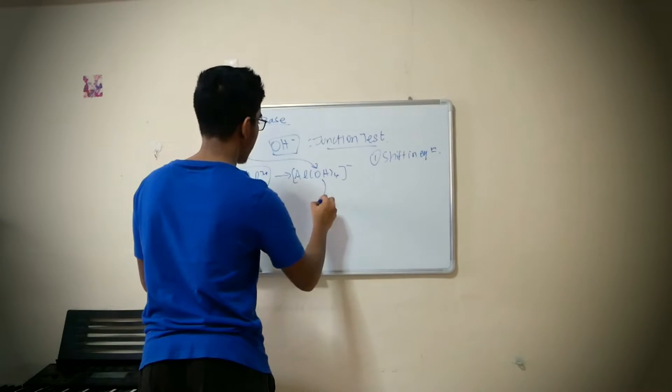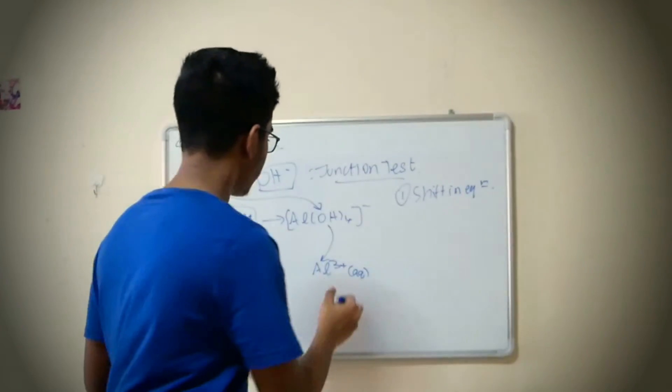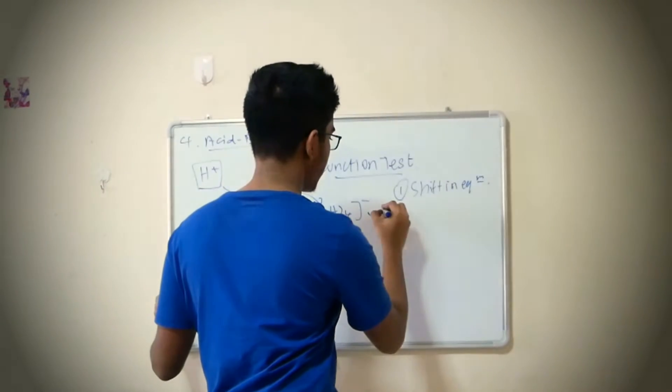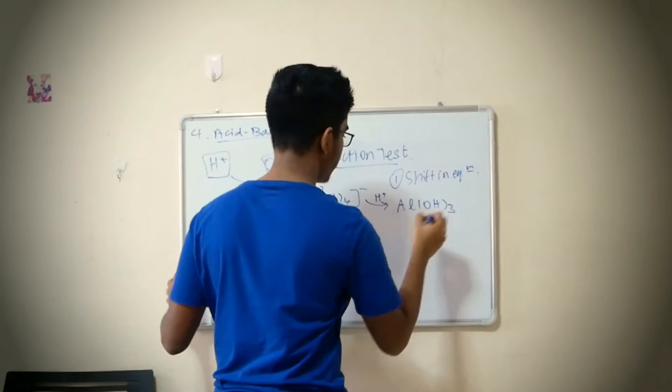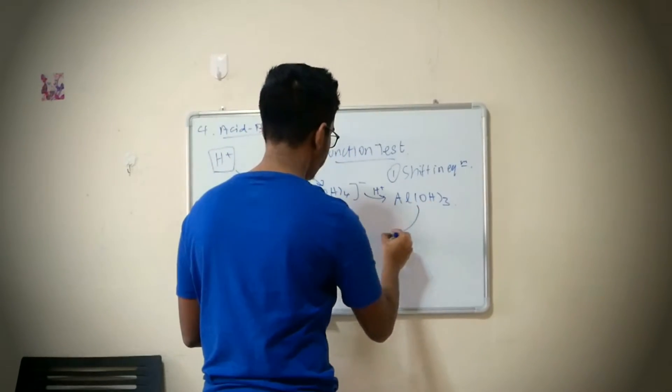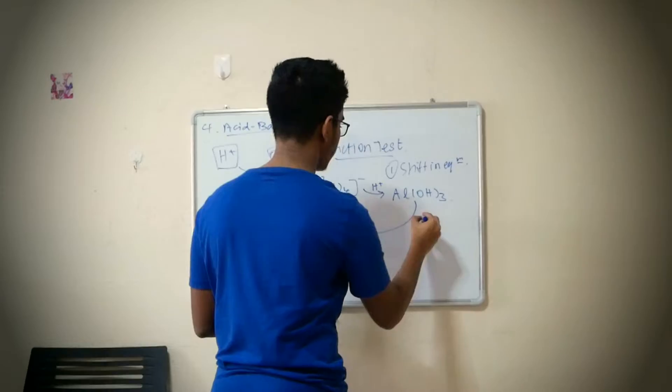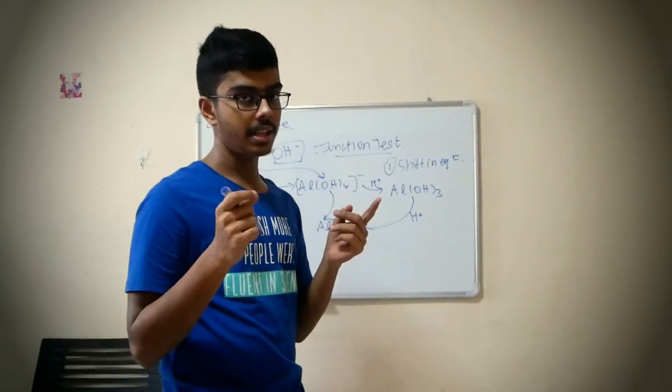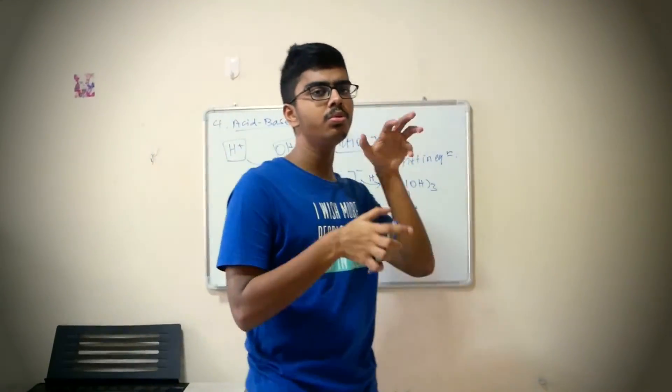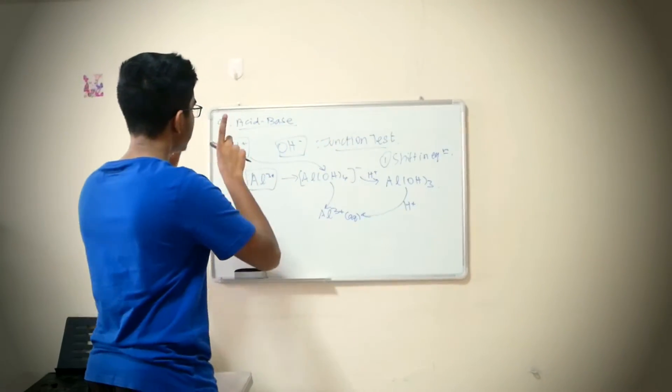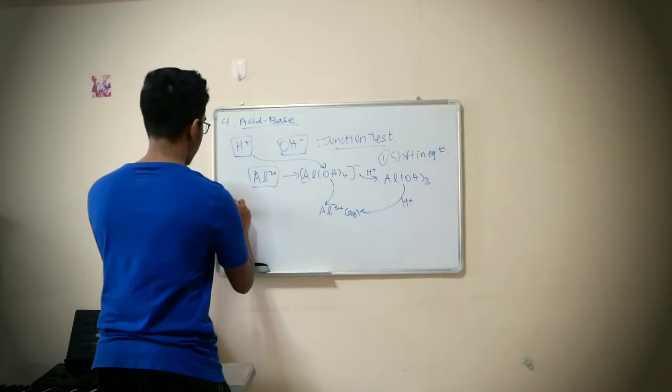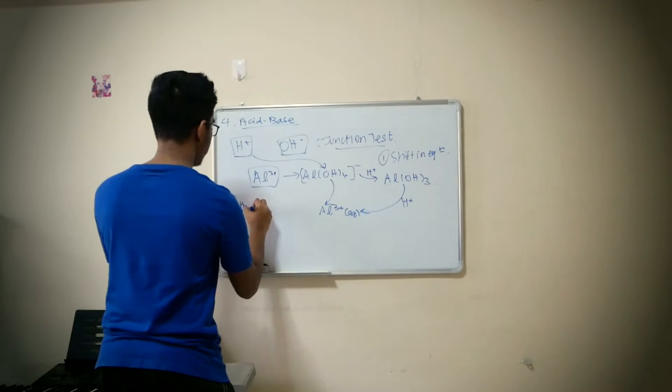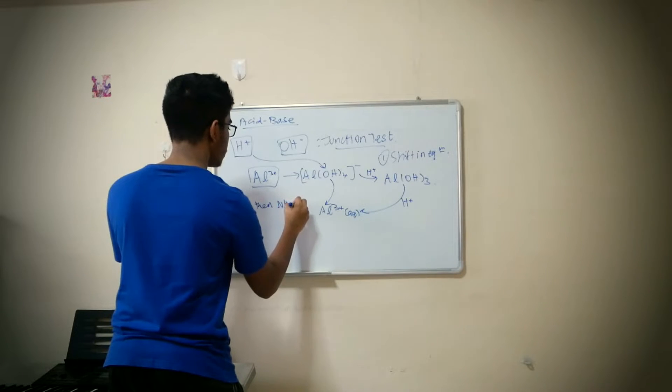Let me give you an example. Al 3+, if you add in excess, it will form Al(OH)4-. And then immediately they ask you to add H+. What does H+ do? H+ would shift that equilibrium. This thing reverts back to Al 3+. This thing reacts with H+ first to form Al(OH)3, and then with further H+ it forms Al 3+ aqueous, which is actually in your school notes.